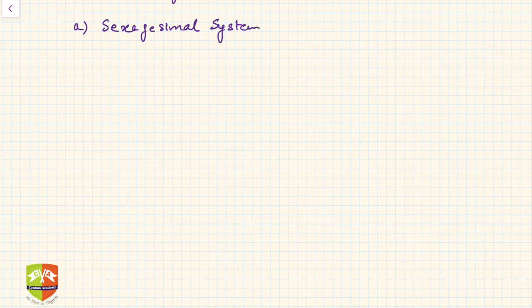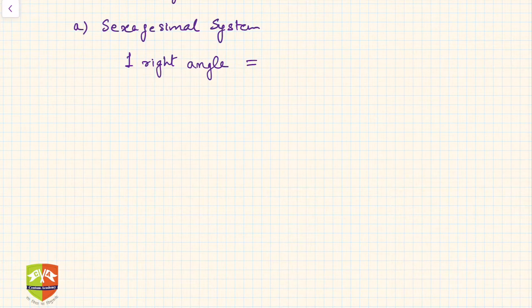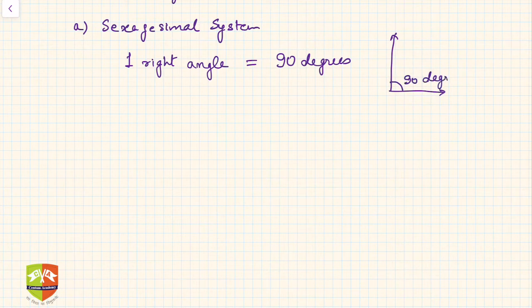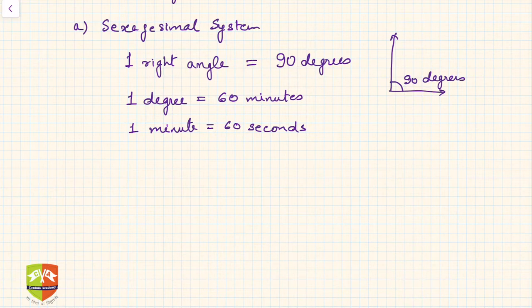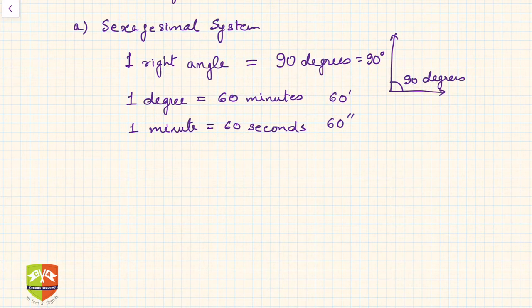In the sexagesimal system, one right angle is equal to 90 degrees. So we know that 90 degrees is where two rays are perpendicular to each other. The subunits of degrees: one degree is equal to 60 minutes, written as 60', and each one minute is equal to 60 seconds, written as 60''. And 90 degrees is written with the degree symbol.